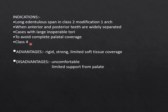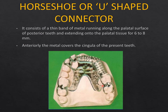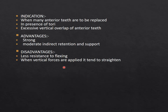In a Class 4 situation, an anterior-posterior palatal bar can be used, though ideally a horseshoe strap is better. The horseshoe-shaped palatal strap offers rigidity and limited soft tissue coverage. However, its disadvantage is that under heavy occlusal loading or bruxism, the horseshoe-shaped strap may flex laterally, reducing rigidity — when vertical force is applied it tends to straighten out.